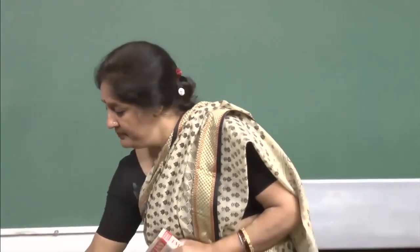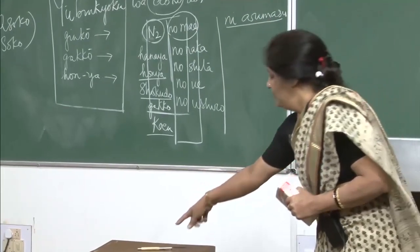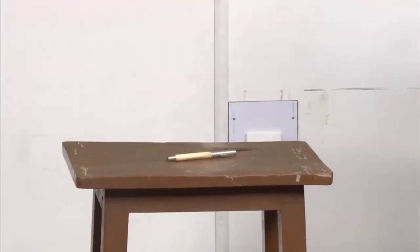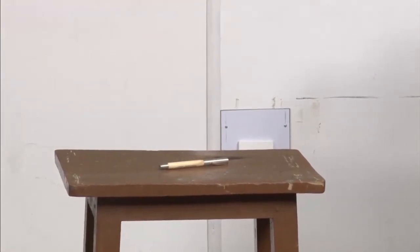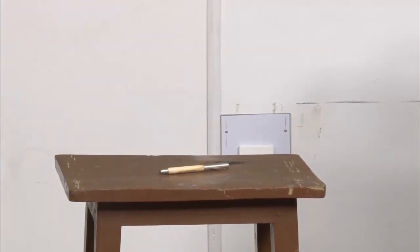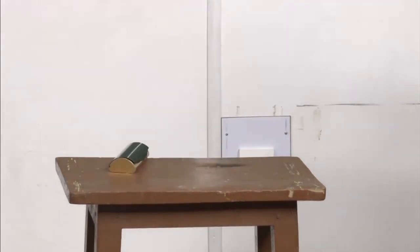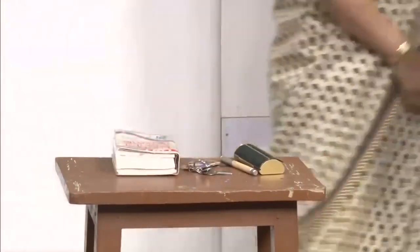Let me see if you got it right. This is a pen. Pen wa doko desu ka? Pen wa tsukue no ue ni arimasu. What about this? Hako wa doko desu ka? Hako wa tsukue no ue ni arimasu. You can practice like this — show things and ask your partner where they are located.